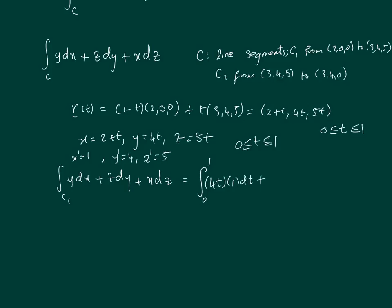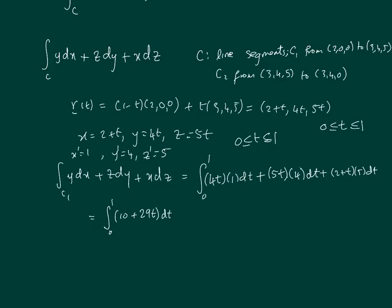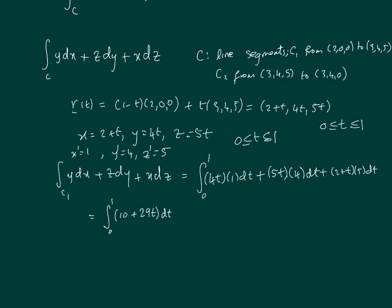The last one is x = 2+t, and dz means z' which is 5, so (2+t)·5·dt. The derivatives are x' = 1, y' = 4, z' = 5. This boils down to the integral from 0 to 1 of (4t + 20t + 10 + 5t) dt, which turns out to equal 24.5.